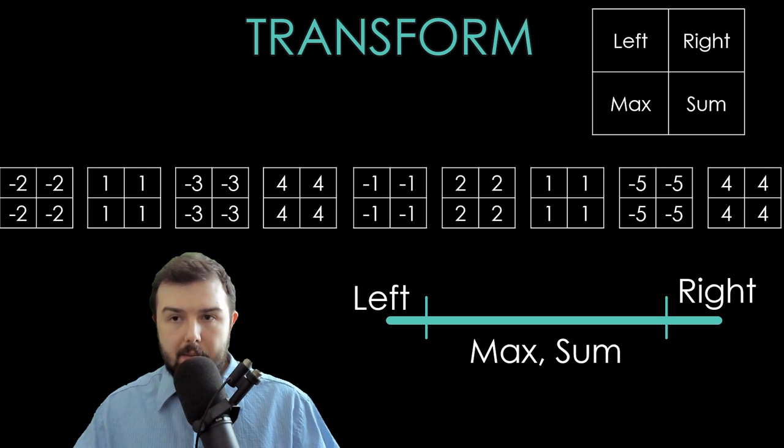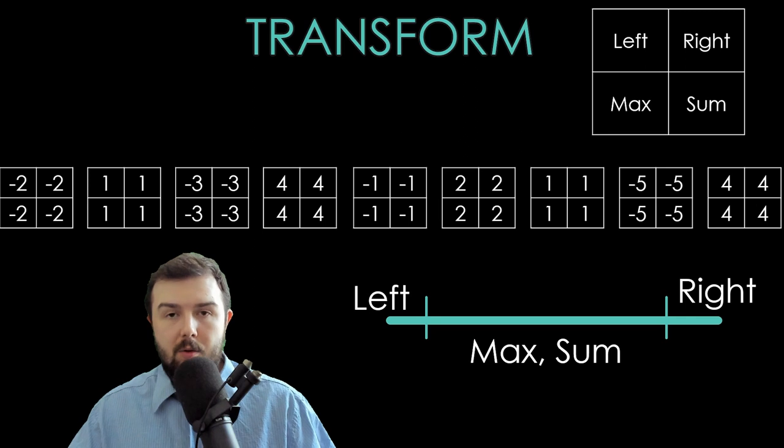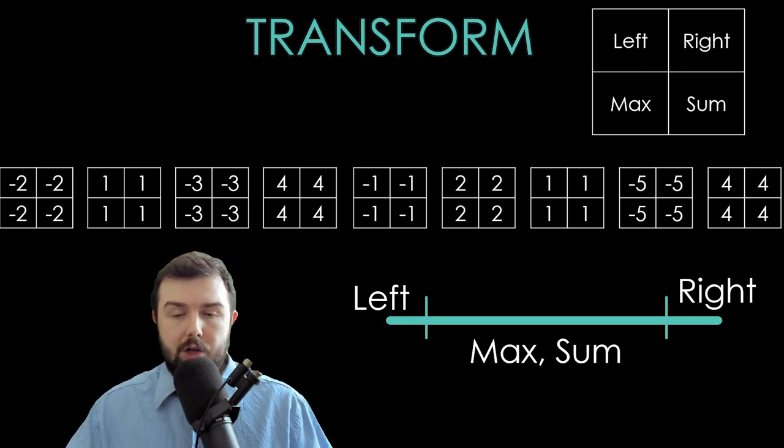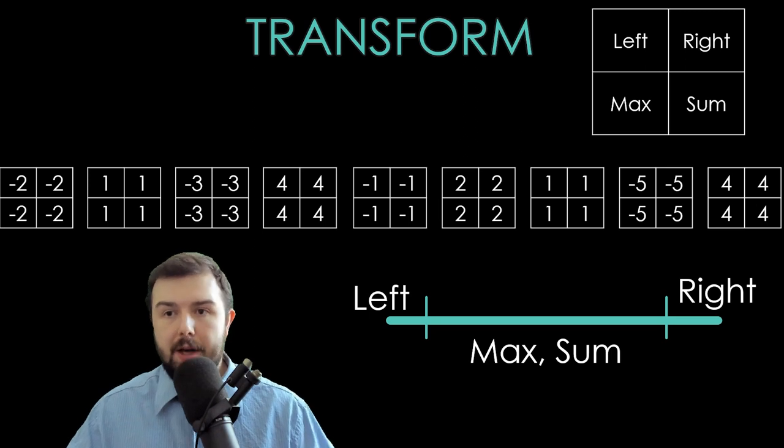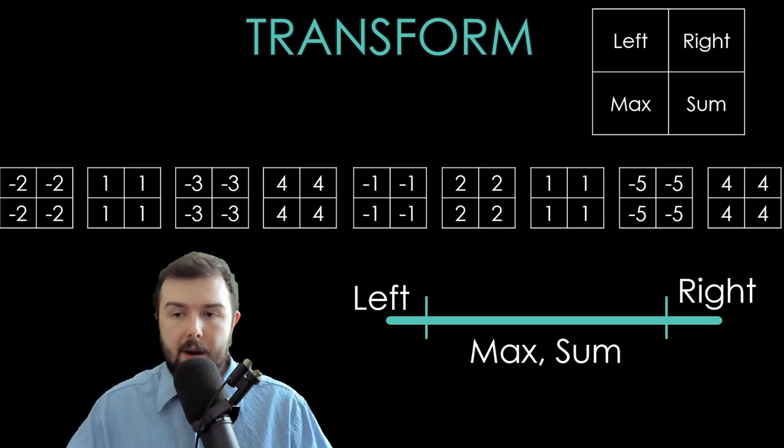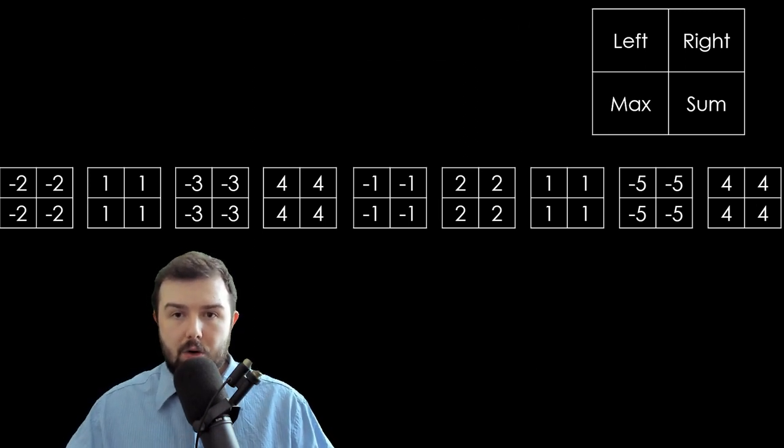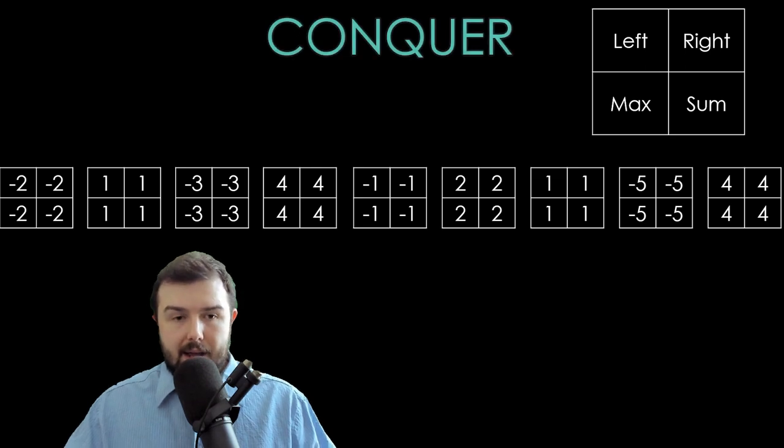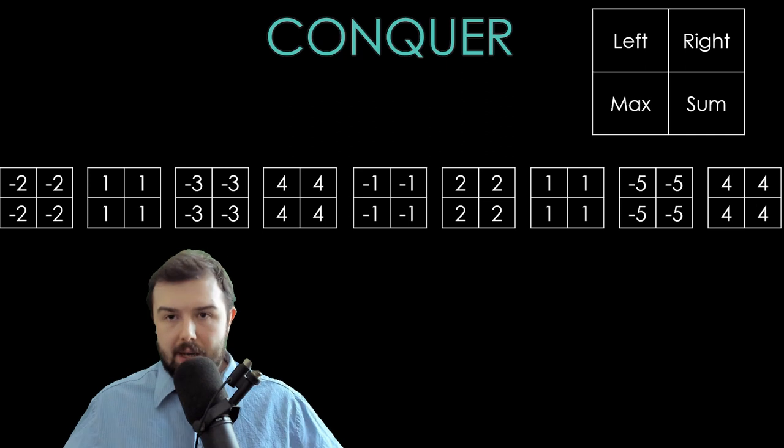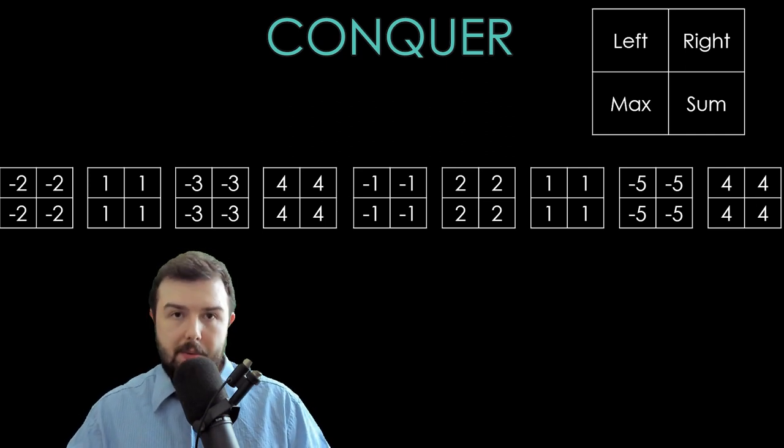So every number becomes its left part, right part, itself as maximum, itself as sum. So we just transform it from one to this matrix where every number is the same. So the next step, we just transform it to something. Let's understand what will be our next step.